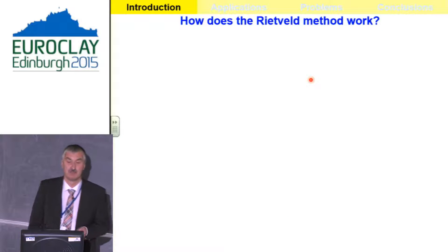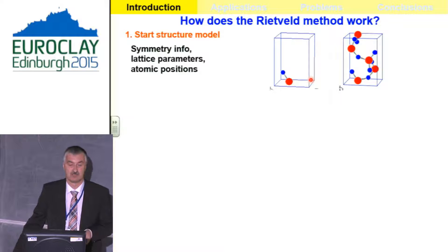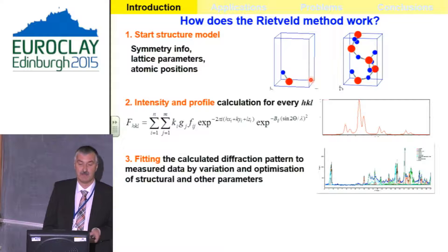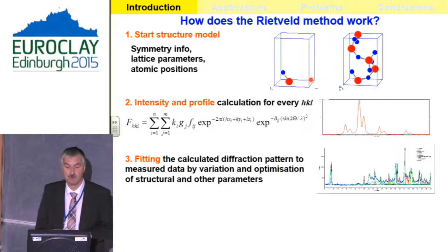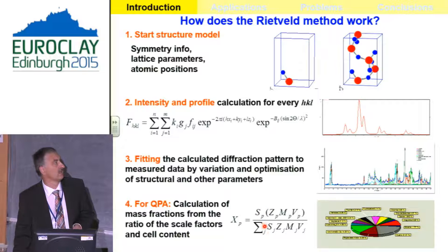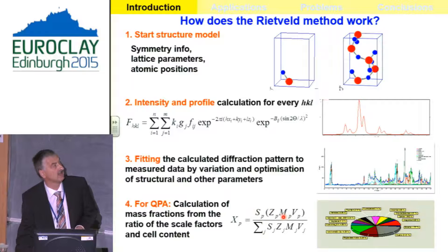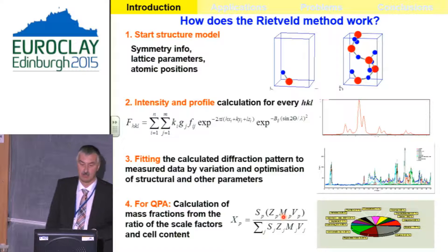To summarize how the Rietveld method works: we start with the elementary cell containing just the asymmetric unit, apply symmetry information to fill the cell, calculate peak intensities and profiles, and then a fitting runs by variation and optimization of structural and other parameters to reach a global minimum. We can also employ scale factors, which are related to the cell content — varying their ratio and weighting by the cell content gives directly the mass fraction of phases in the mixture.